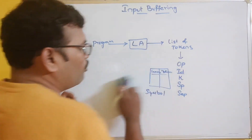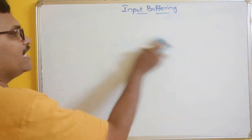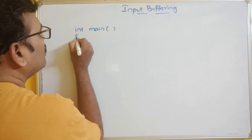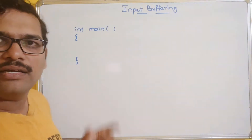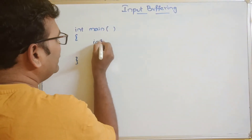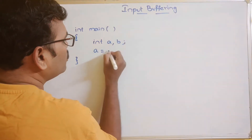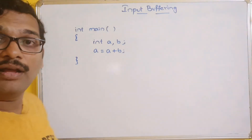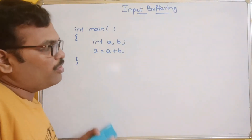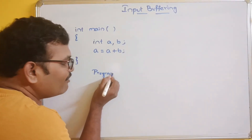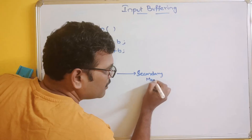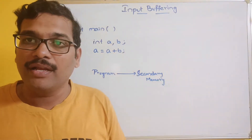With the help of input buffering, let us take an example: int main, or simply int a, b; a = a + b. This is a small program and now we need to identify the tokens. The complete program will be saved in the secondary memory. Whatever data we are storing will be stored in secondary memory, and while execution the data from secondary memory will be retrieved to the main memory.